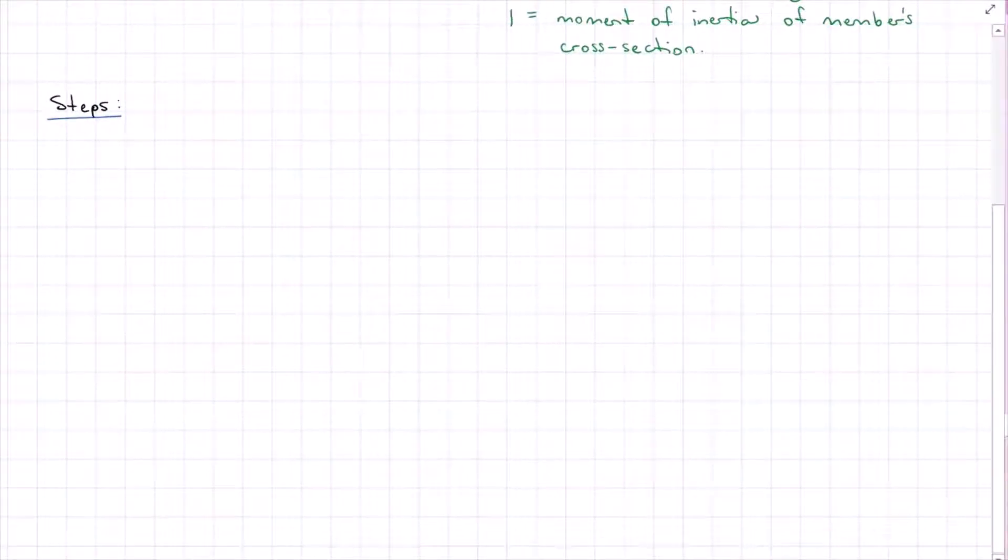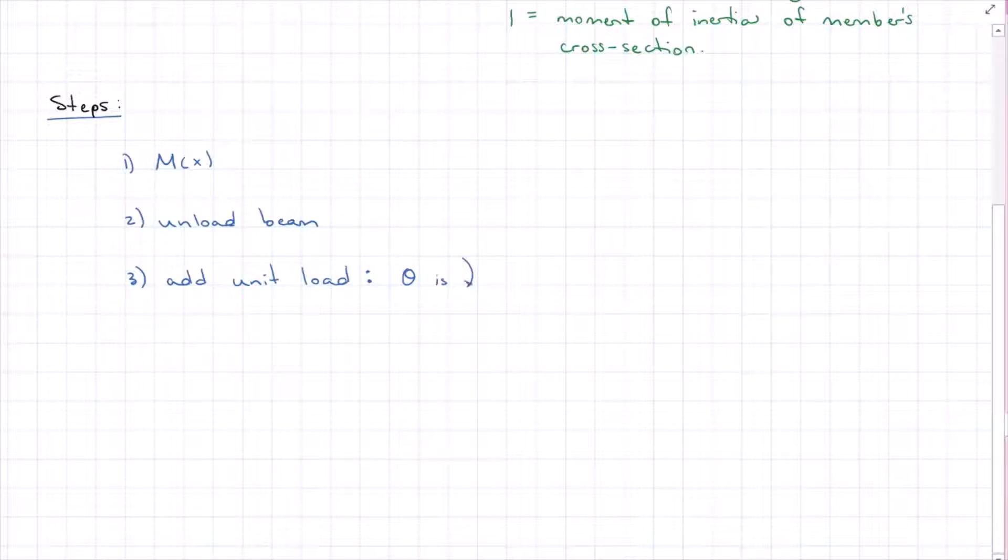This method works out real nice to have steps. So step number one is our moment equations in terms of x. Step number two, we're going to unload the beam. Step number three is we're going to add a virtual load or a unit load. And that is going to be, if we're looking for slope, we're going to put a moment load, an applied moment load. If we're looking for deflection, then we are going to put a point load.